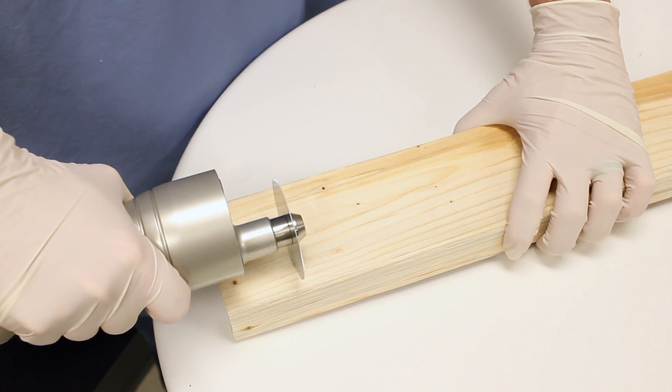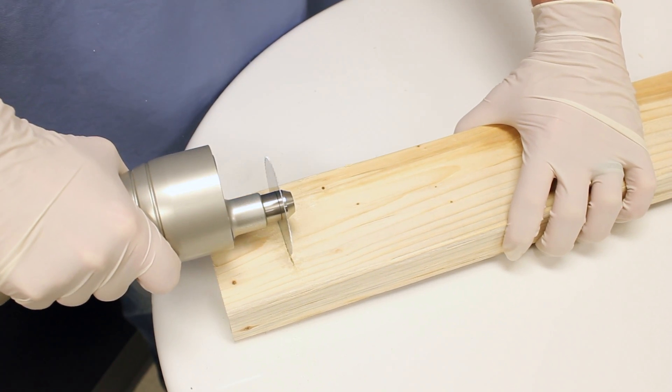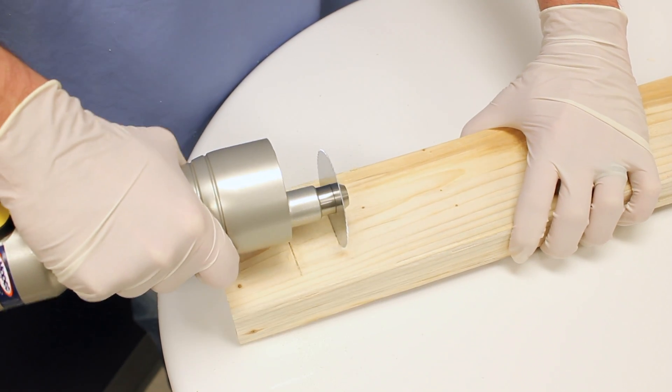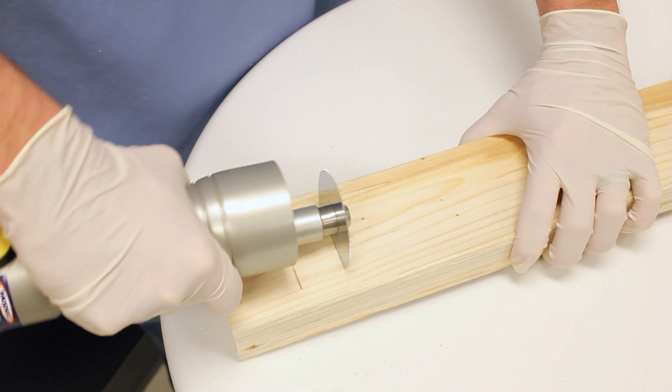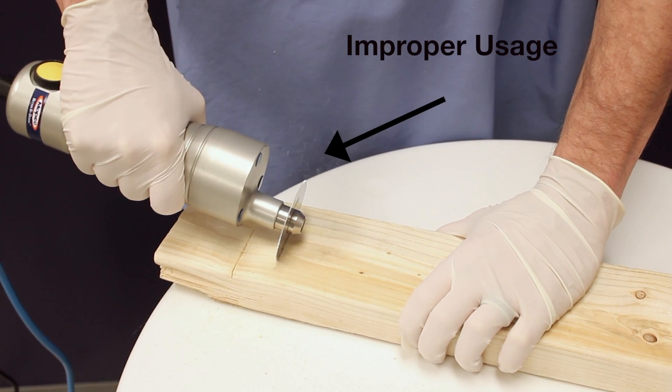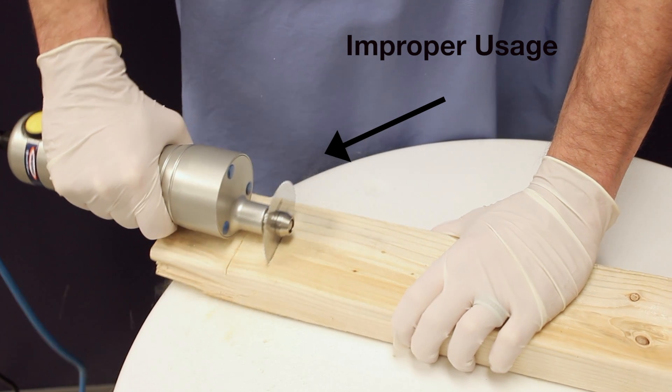Your Mopec 5000 Autopsy Saw is designed with an equal distribution of weight. When cutting into an object, hold the saw perpendicular and avoid adding excess pressure. Properly holding the saw will prevent any damage as well as wear and tear to the blades.